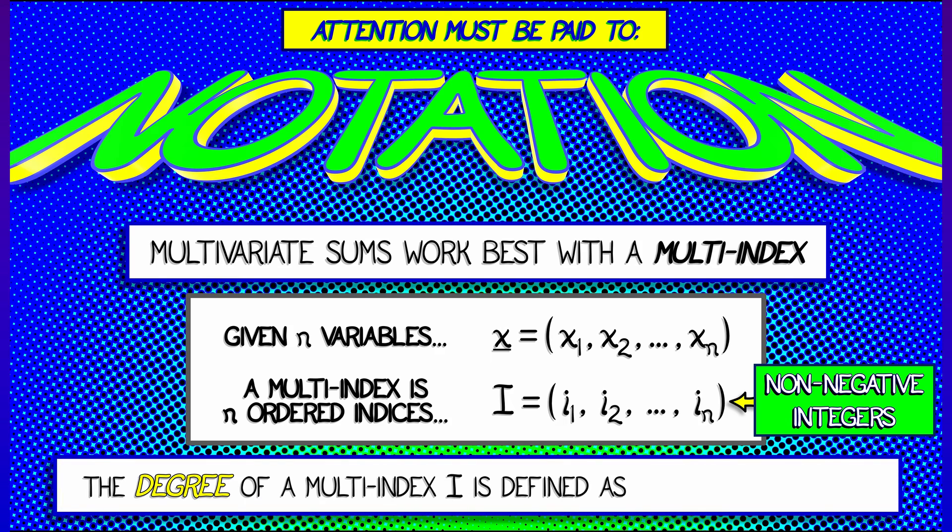We're going to say that the degree of that multi-index I is denoted with absolute value signs, and it's equal to the sum of the component indices, i1 plus i2, all the way up through plus i_n.